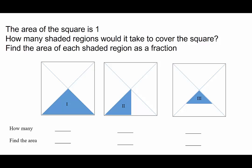For example, how many regions number 1 would it take to cover the square? It would take 4 of them. The answer to the question how many is 4.